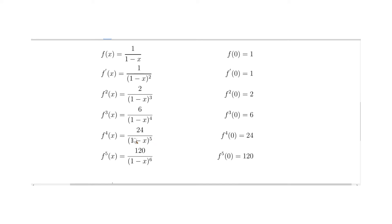To calculate the values of all these derivatives at zero: in the denominator we have (1 minus 0) squared, cubed, to the 4th, to the 5th — all equal 1, since 1 to any power is 1. So 1 divided by 1 is 1, 2 divided by 1 is 2, 6 divided by 1 is 6, then 24 and 120.